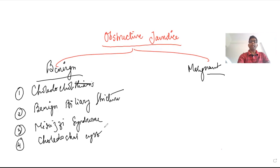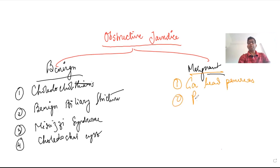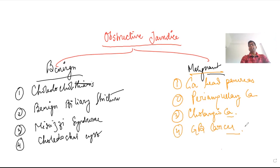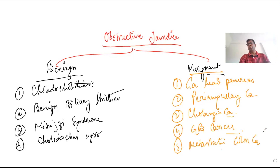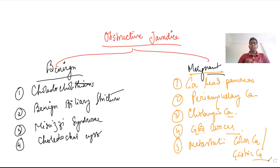Moving on to the malignant causes, the most commonly encountered are: carcinoma of the head of pancreas, periampullary carcinoma, cholangiocarcinoma (carcinoma of the bile duct), and gallbladder carcinoma. There are also rarer malignant causes such as metastatic deposits to the portal lymph nodes, as in metastatic colon cancer or gastric cancer, which can cause obstructive jaundice.